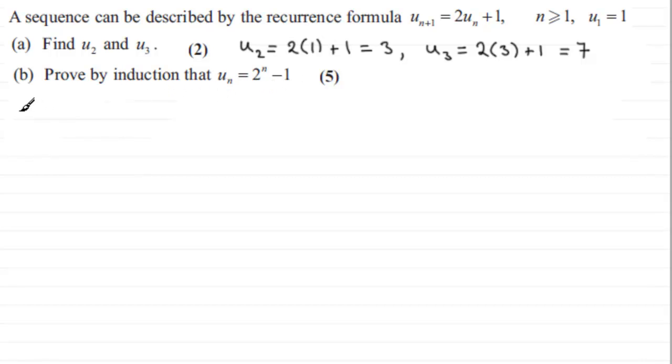So let's start then by working out whether it's true when n equals 1. So when n equals 1, what we've got is that 2 to the power 1 minus 1, I'm just going to consider the right hand side here. 2 to the power 1 minus 1 is clearly going to equal 2 minus 1, which is 1. And 1 is, we're told, the first term, u1 is 1. So we can say therefore true when n equals 1.